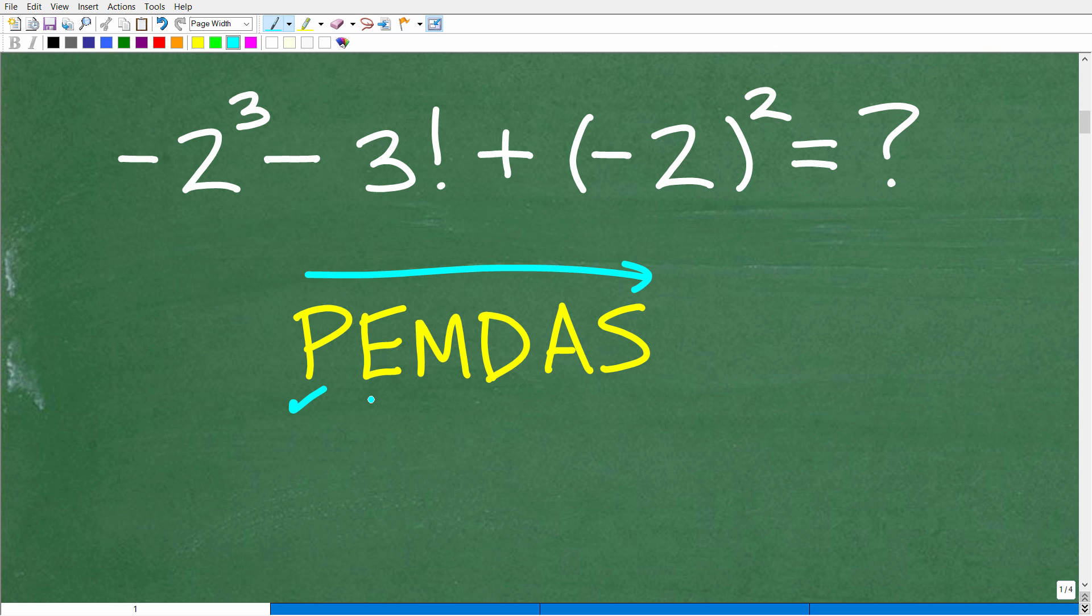The E here is exponents. Basically, you could think of it as powers. If I have two to the third power, this two is called the base. This little three is called the exponent. The entire thing is a power. So the little number in the top right is the exponent. E stands for exponents, but effectively you're going to be thinking in terms of powers. MD and AS: M stands for multiplication, D is division, A is addition, and S is subtraction.